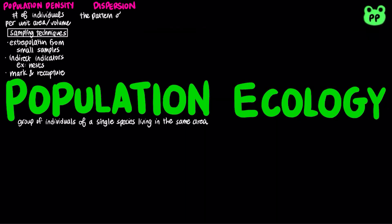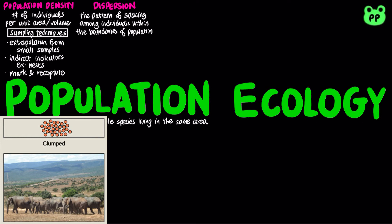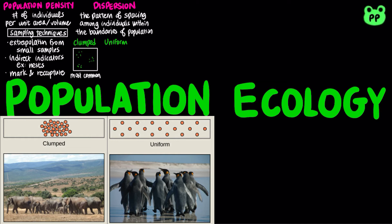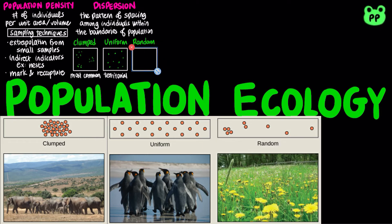Dispersion is the pattern of spacing among individuals within the boundaries of the population. There are three patterns of dispersion. A clumped dispersion is the most common, in which individuals aggregate in patches, which may be influenced by resource availability and behavior. In a uniform dispersion, individuals are evenly distributed, which may be influenced by social interactions such as territoriality. In a random dispersion, the position of each individual is independent of other individuals, which occurs in the absence of strong attractions or repulsions.